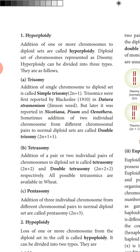Pentasomy: addition of three individual chromosomes from different chromosomal pairs to the normal diploid set, giving 2n+1+1+1, or simply written as 2n+3. This is called pentasomy. So hyperploidy has three types: trisomy (2n+1), double trisomy (2n+1+1), tetrasomy (2n+2), double tetrasomy (2n+2+2), and pentasomy (2n+3).